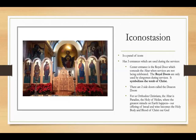The iconostacion, which separates the nave from the sanctuary, is a panel of icons, and most iconostasions have the same pattern. There are three entrances used during the services. The central entrance — the royal doors — conceals the altar when services are not being celebrated, and they are only used by clergymen during services. The royal doors symbolize the tomb of Christ. Then we have the side doors, called the deacon doors. For us Orthodox Christians, the altar is paradise — the holy of holies — where the greatest miracle on earth happens: our offering of bread and wine becomes the holy body and blood of Jesus Christ our God.